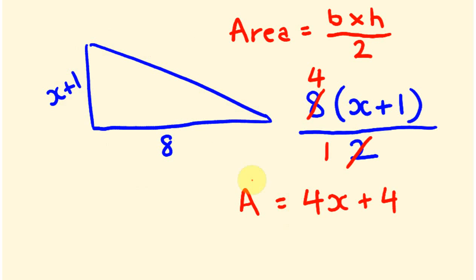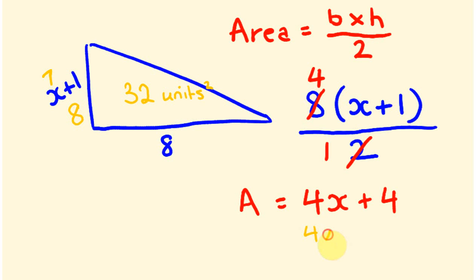It's kind of cool that we can get an expression for the actual area. Let's substitute a value to check — let's call x equal to 7. So the height is 7 plus 1, which is 8. 8 times 8 is 64, and half of that is 32 units squared. Using our formula: 4 times 7 is 28, plus 4 equals 32 units squared. Our expression checks out.